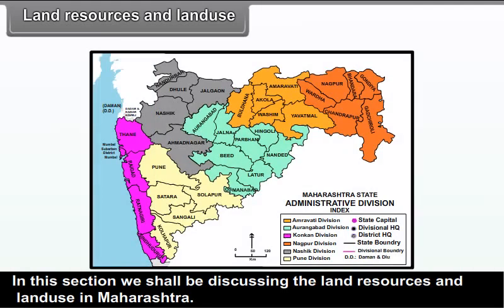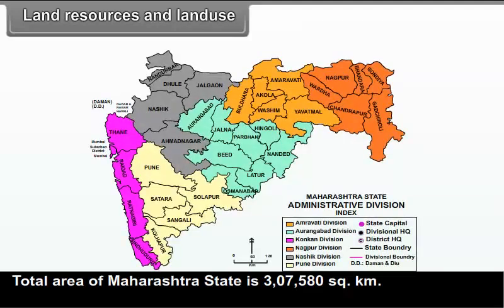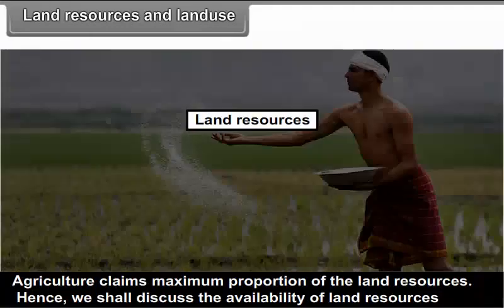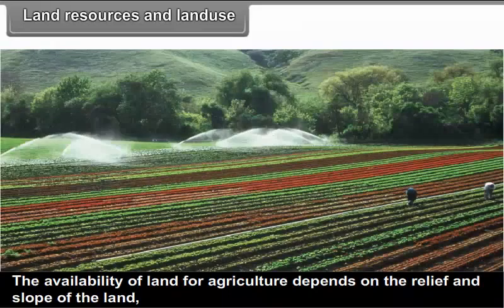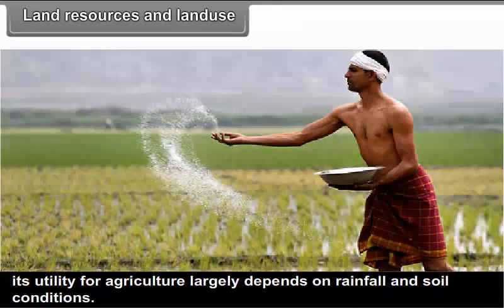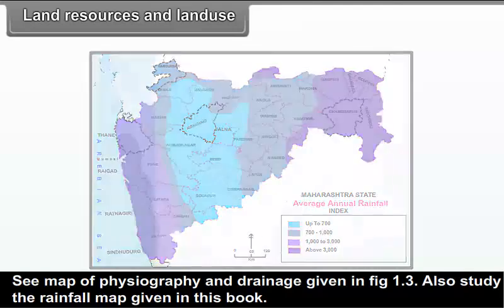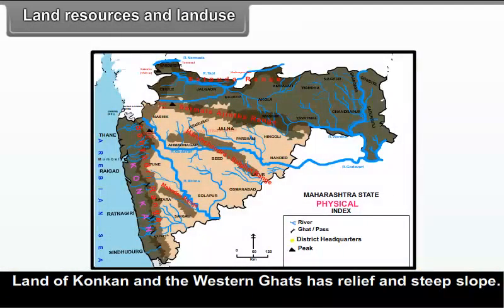In this section, we shall discuss land resources and land use in Maharashtra. The total area of Maharashtra state is 3,75,800 square kilometers. Agriculture claims the maximum proportion of land resources. The availability of land for agriculture depends on the relief and slope of the land, and its utility largely depends on rainfall and soil conditions. See the map of physiography and drainage in figure 1.3 and the rainfall map in this book.